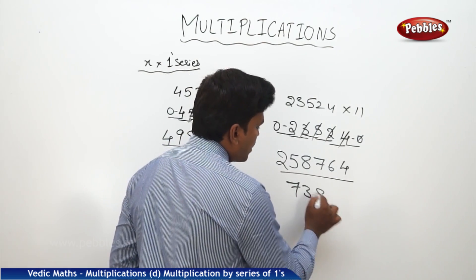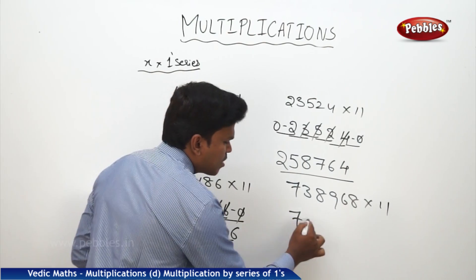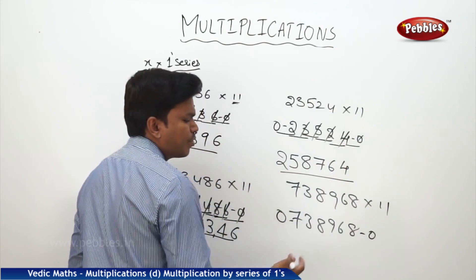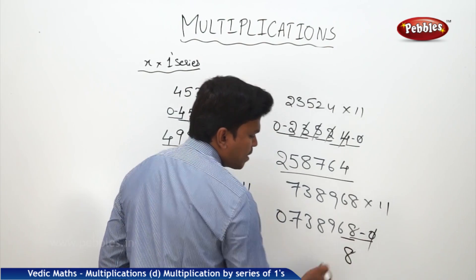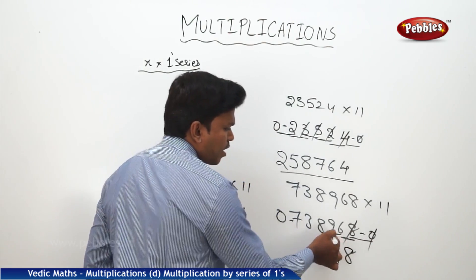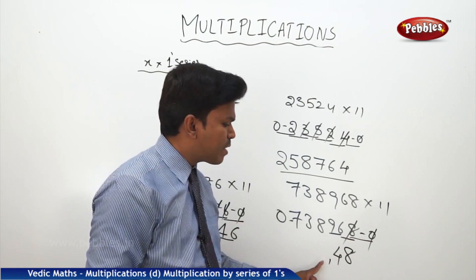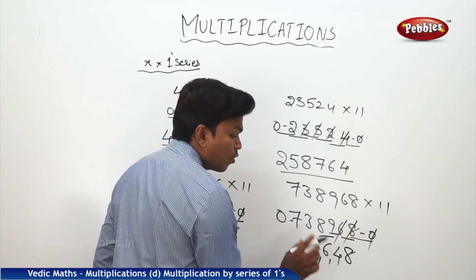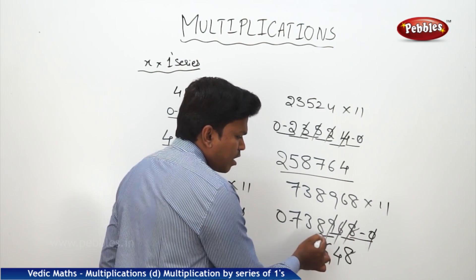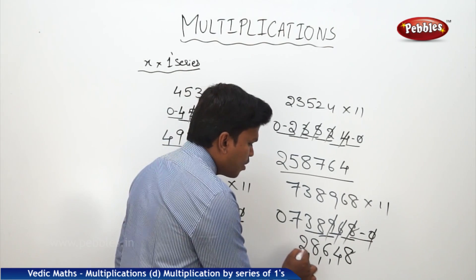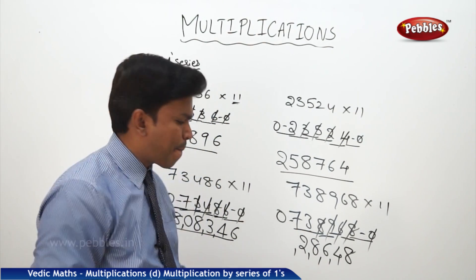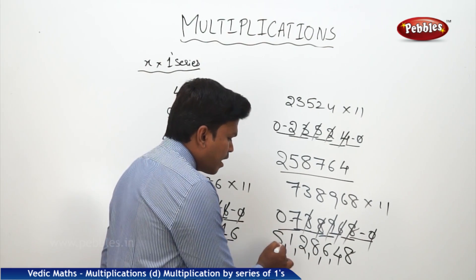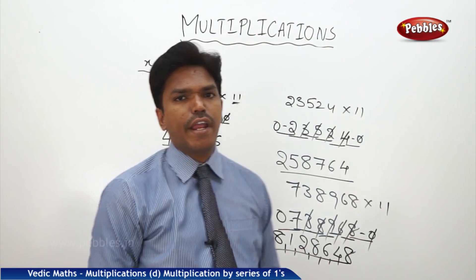One more example: 738968 into 11. Drop the number: 738968. Since there are 2 ones, one zero after and before. Add maximum 2 digits at a time from the right. 0 plus 8 = 8. Then 8 plus 6 = 14, drop 4, carry 1. Next: 9 plus 6 = 15, plus 1 = 16, drop 6, carry 1. Then 8 plus 9 = 17, plus 1 = 18, drop 8, carry 1. Then 3 plus 8 = 11, plus 1 = 12, drop 2, carry 1. Then 7 plus 3 = 10, plus 1 = 11, drop 1, carry 1. Finally 0 plus 7 = 7, plus 1 = 8. So the answer is 8128648.